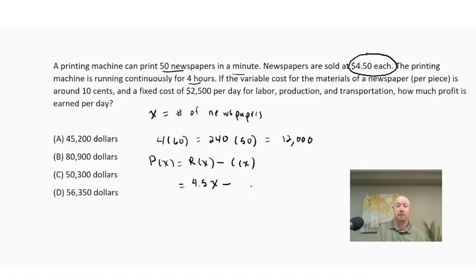Minus my cost function. Now my cost function is going to be my variable costs plus my fixed costs. So that means it costs us 10 cents each per newspaper, so it'd be 0.10 times X, plus I also have to pay these fixed costs per day, so that's going to be 2,500. Now since this is a fixed cost, I'm not going to multiply it by X. It's just cost for my labor, production and transportation. So this is my profit function here.